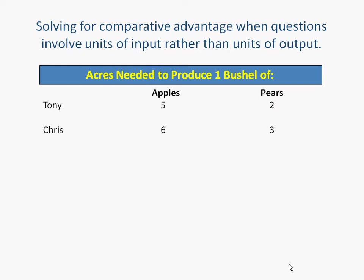So in this case, Tony and Chris are both farmers and they are devoting a certain number of their acreage to the production of apples and pears. The question isn't about apples and pears — it's about acreage. That's a unit of input. Sometimes the question involves the number of robotic arms needed in a factory to produce a car or a truck. So we have to be a little careful here. One of the first questions you've got to ask yourself is: is this a question of input or output? In most cases it's about output, but I want to take you through an example of how we solve for input rather than output.